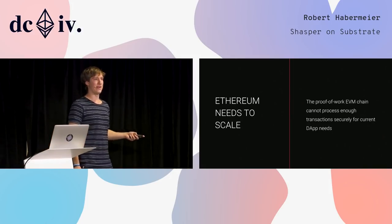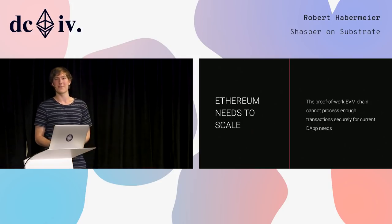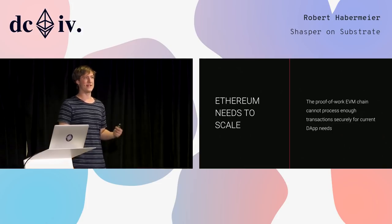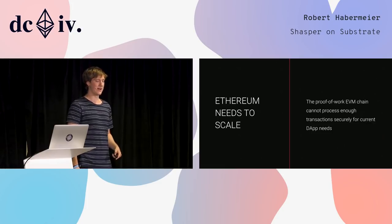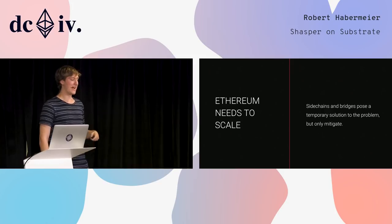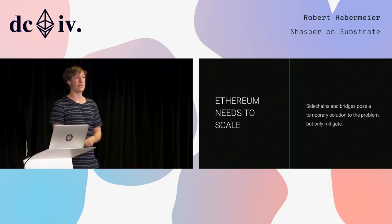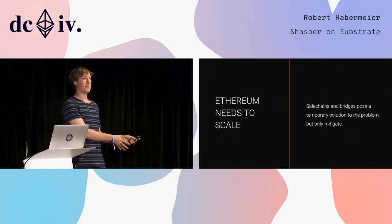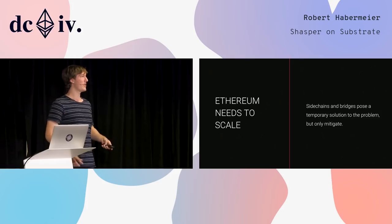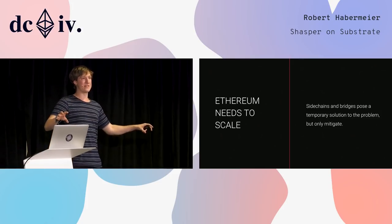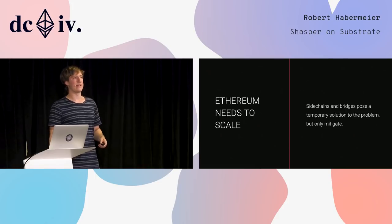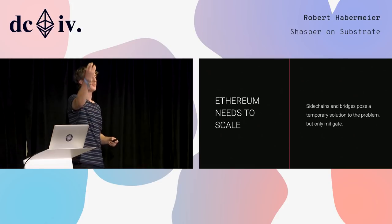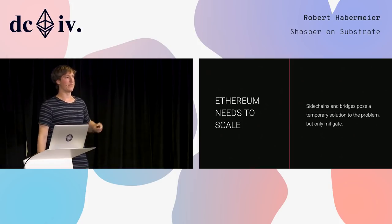To get to the direct point: Ethereum basically needs to scale. The EVM can't process enough transactions for the uses that we're already seeing. Side chains and bridges are a temporary solution to this problem, but they only mitigate it. At some point, even if you have a ton of side chains and a ton of bridges, you're fragmenting the ecosystem, which isn't ideal. And also, you're just delaying the scaling issues, because at some point you won't be able to get all those bridge notifications onto the chain. So you really need a root-level chain that's scaling.